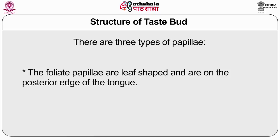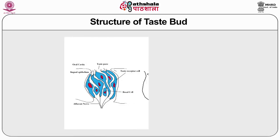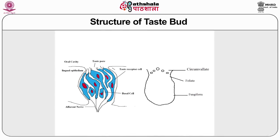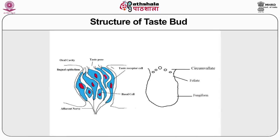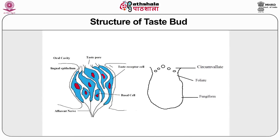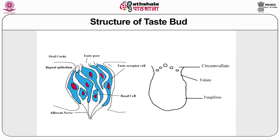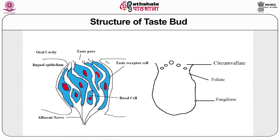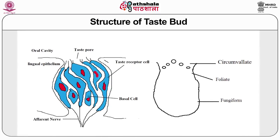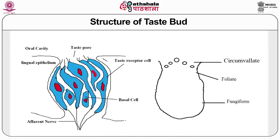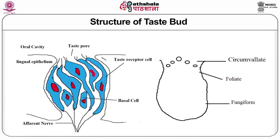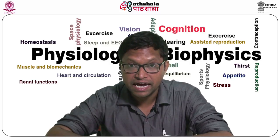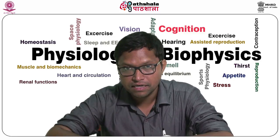Foliate papillae are leaf-shaped and located on the posterior edge of the tongue. The arrangement of taste buds on the three types of papillae differs. The circumvallate and foliate papillae are associated with Ebner's glands, which are serous glands near their base. These gland secretions keep the tongue moist, prepare it for new tastants by diluting chemical substances, and wash away particulate matter from the tongue — dilution being of protective value in the case of bitter and irritant substances.